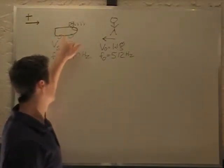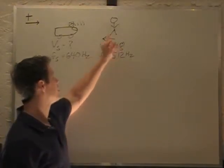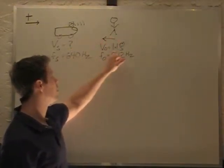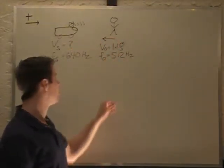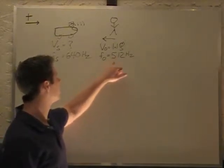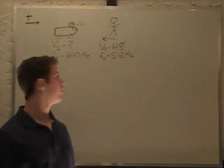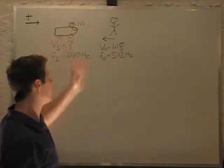We don't know the velocity of the car, but we know the man's velocity towards the car is 1.1 meters per second, and the observed frequency is 512 hertz. We're asked to find the velocity and direction of this vehicle.